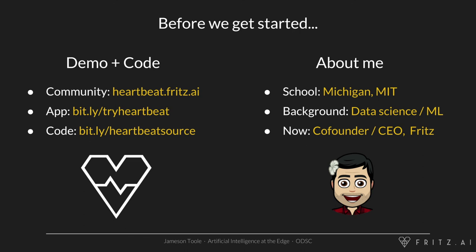Before we get started, a couple things. If you're the type of person who likes to dive right in, feel free to check out our developer community at heartbeat.fritz.ai. We've also got a demo app for iOS with about five different neural networks, all in an iPhone app. They run directly on your phone, giving you a taste of what you can build by incorporating machine learning and deep learning into your applications. We've also open sourced all of the code — go to bit.ly/heartbeat-source to see the entire project, fork it, modify it, and use it for your own projects.